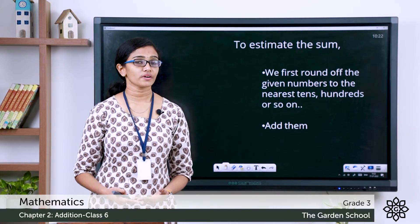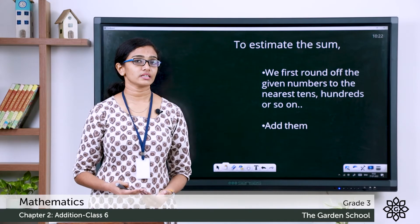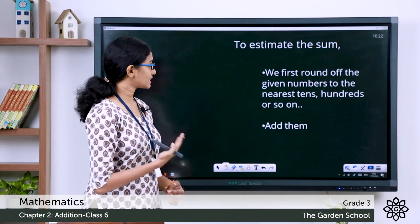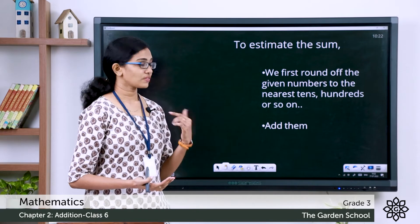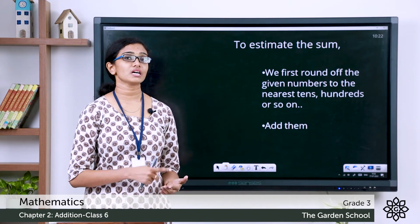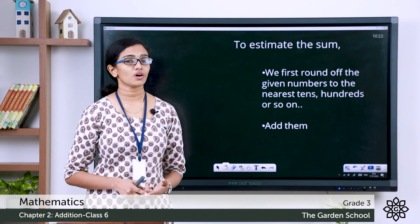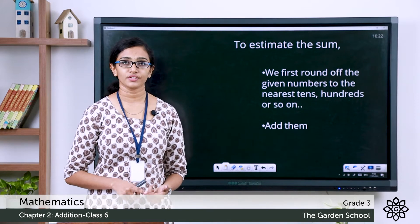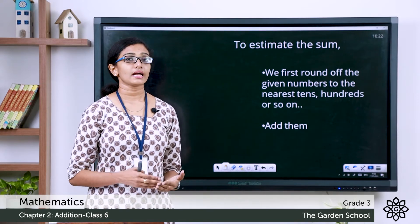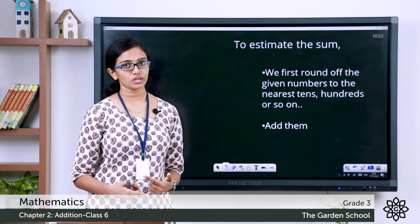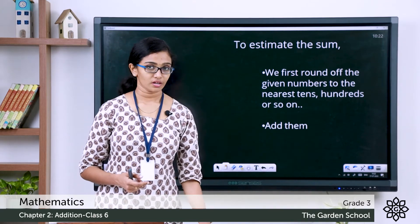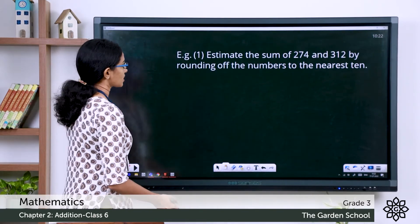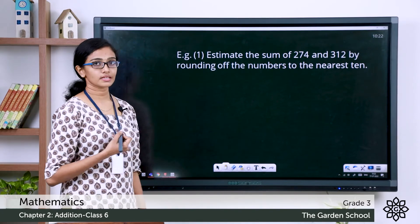So how do you find the estimated sum, which is the result of an addition operation? To find the estimated sum, you first round off the given numbers, or the addends, to the nearest ten, hundred, thousands, and so on, and then do the addition. Now let's see that with an example.